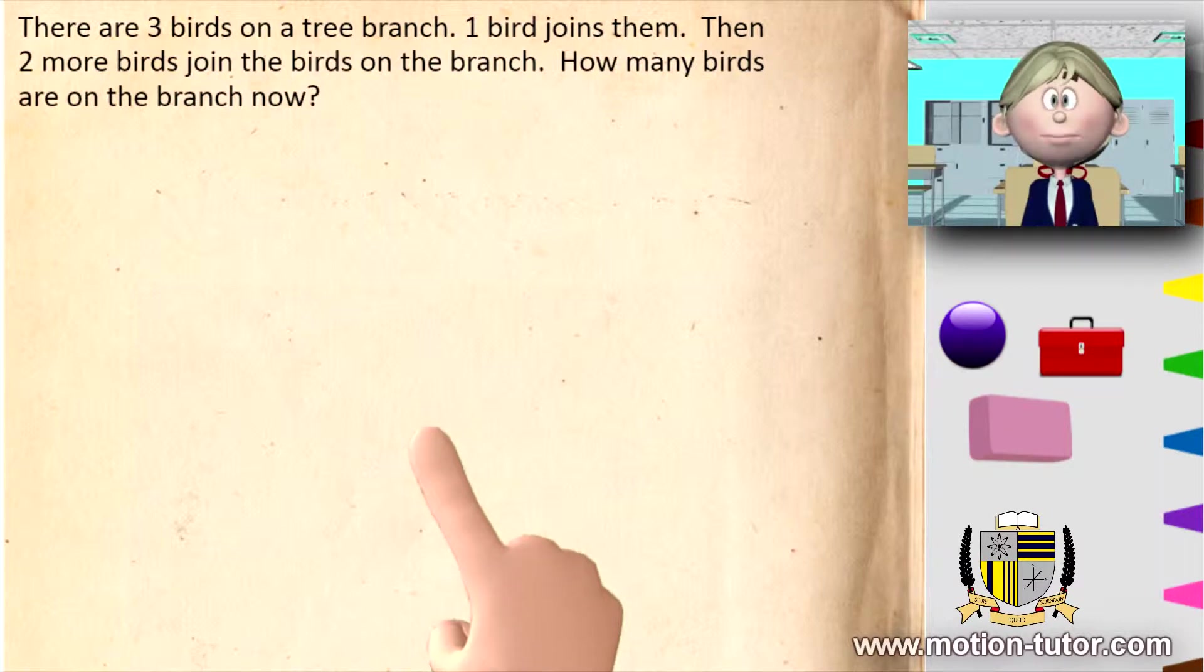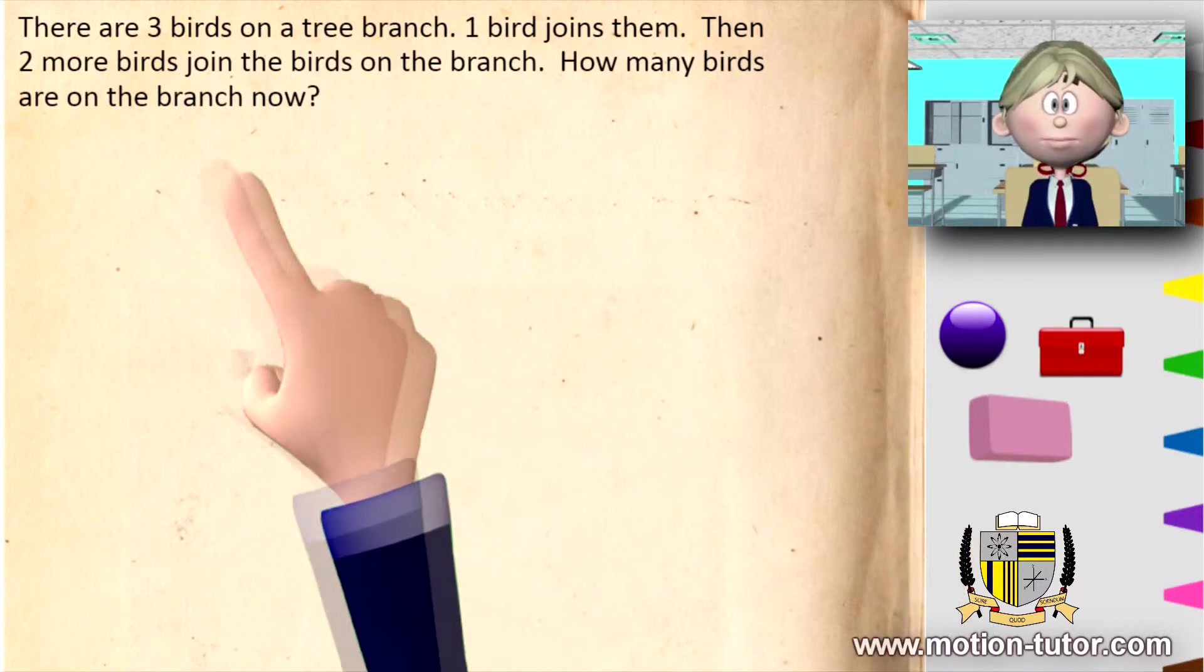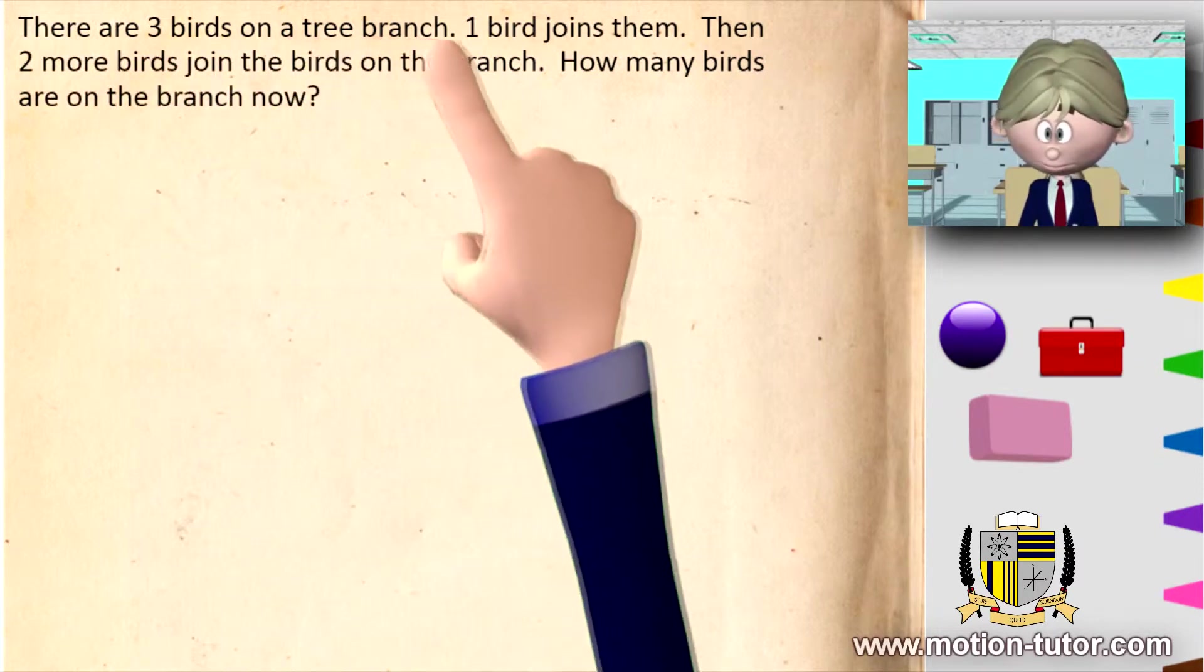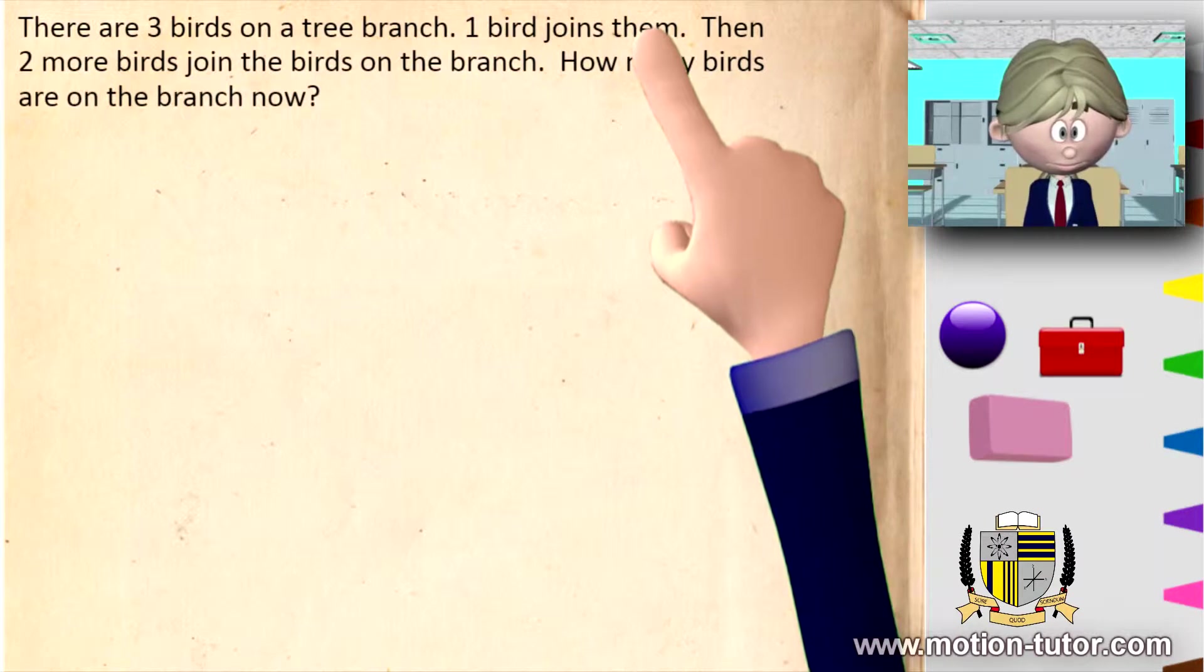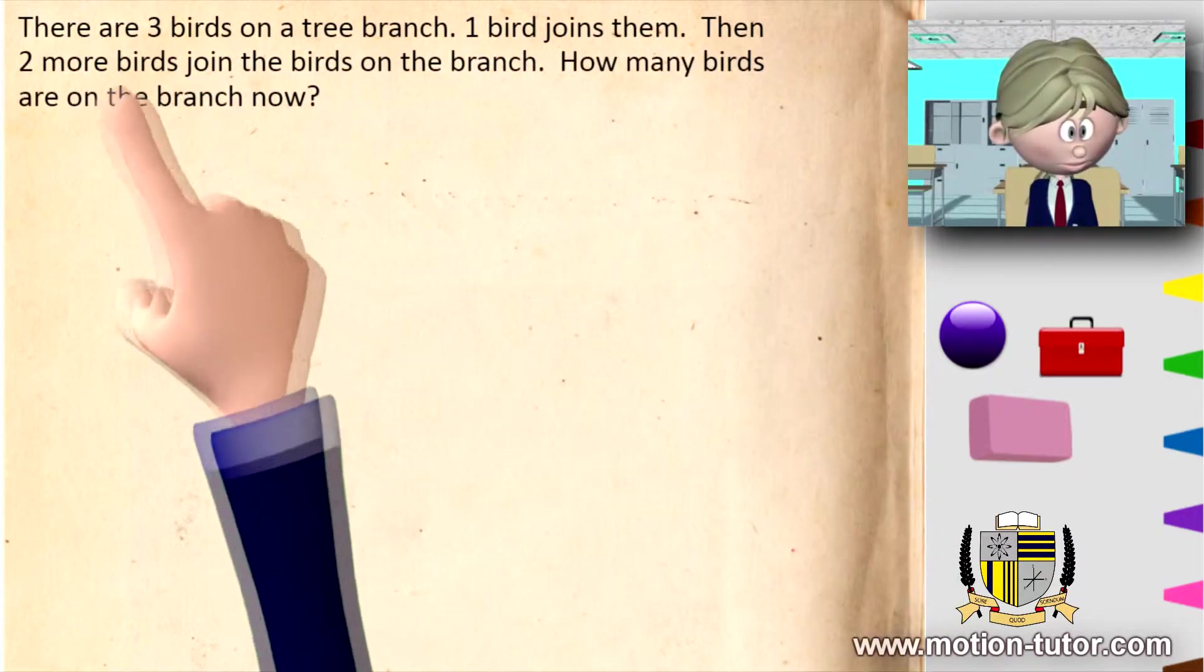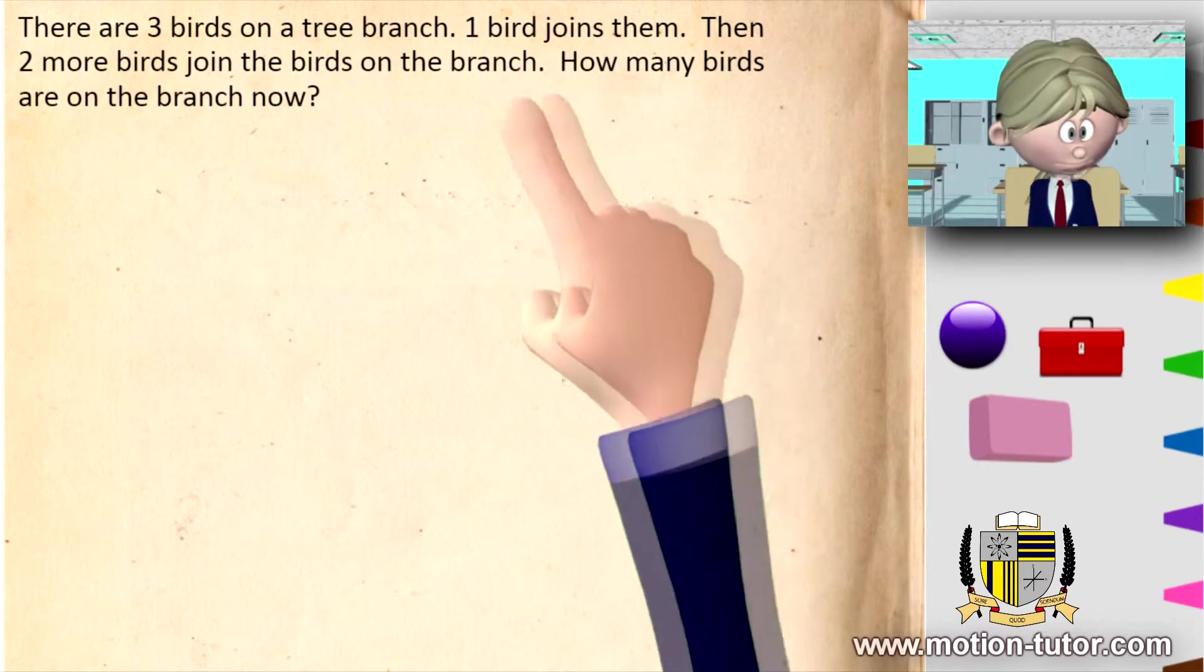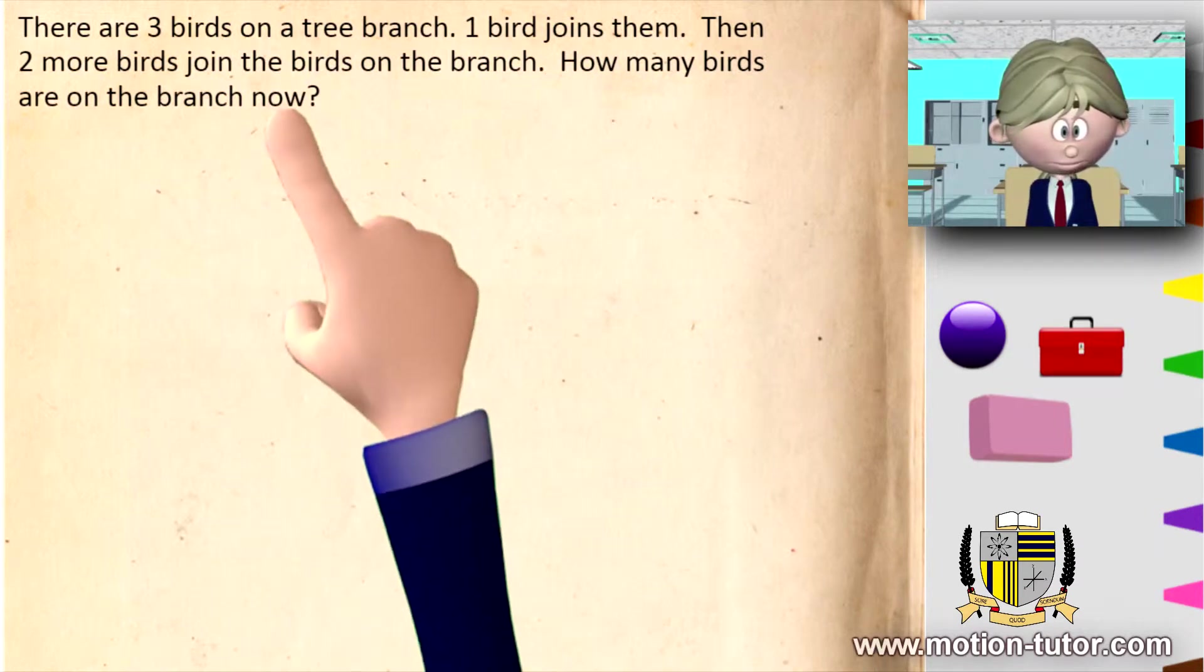Now this one's a tricky one. You really need to think about this one. There are three birds on a tree branch. One bird joins them. Then two more birds join the birds on the branch. How many birds are on the branch now?